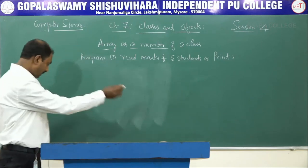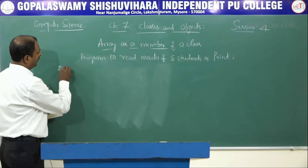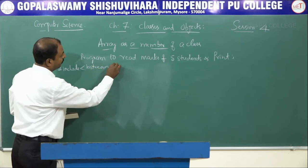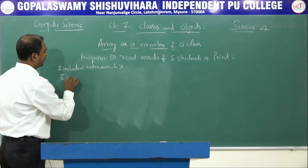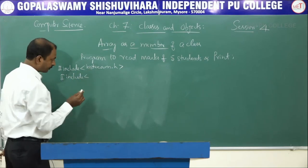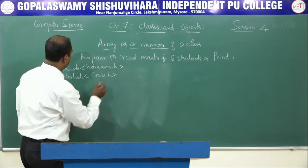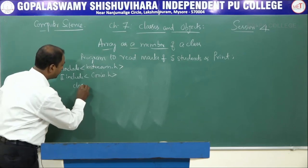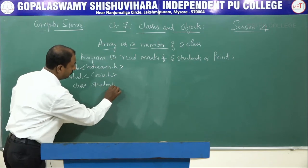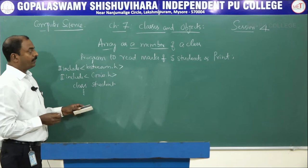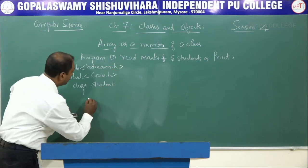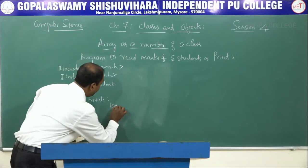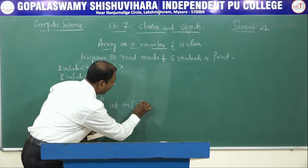Let us start the program. First, we write the header files: #include iostream.h and #include conio.h. Then we declare a class. The class name is 'student'. Under the private access specifier, we declare an array int m[5] and a loop control variable i.